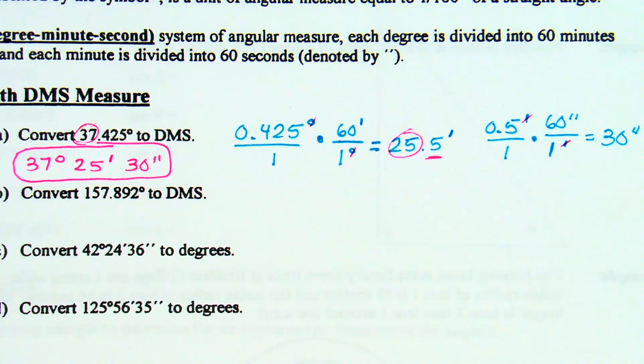So the shortcut there is we took the decimal part, we multiply it by 60. That new whole number became my minutes. We took the next decimal part, multiplied it by 60 again. And that whole number part becomes the seconds. Questions on how I did that? Take me through the next one.